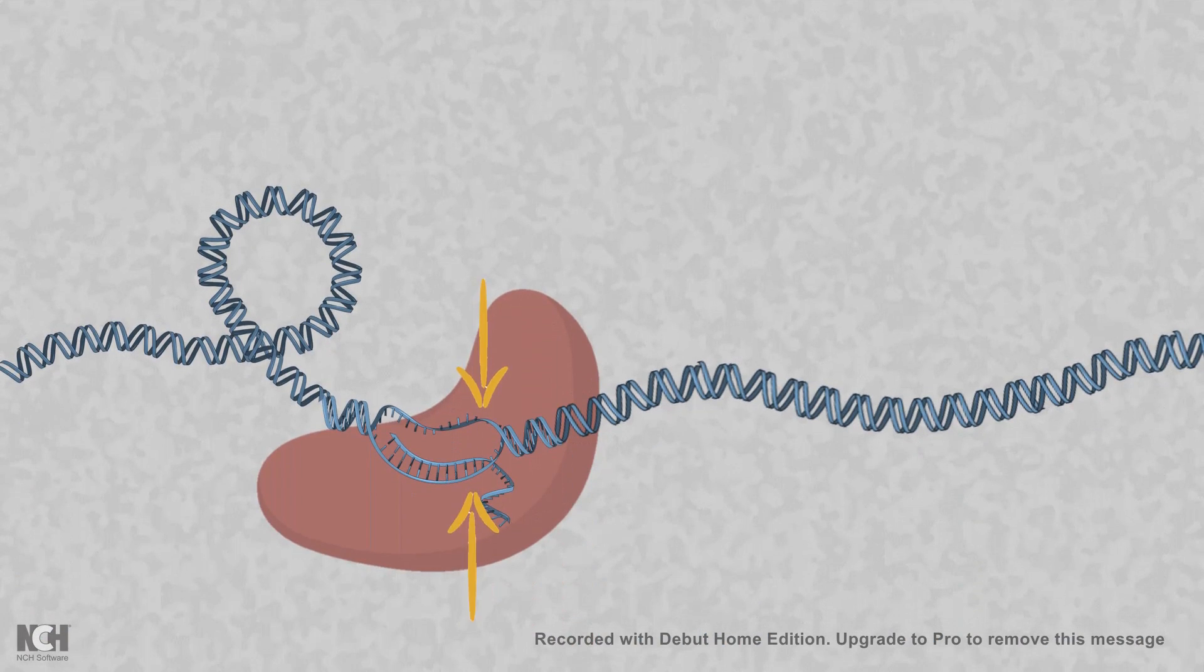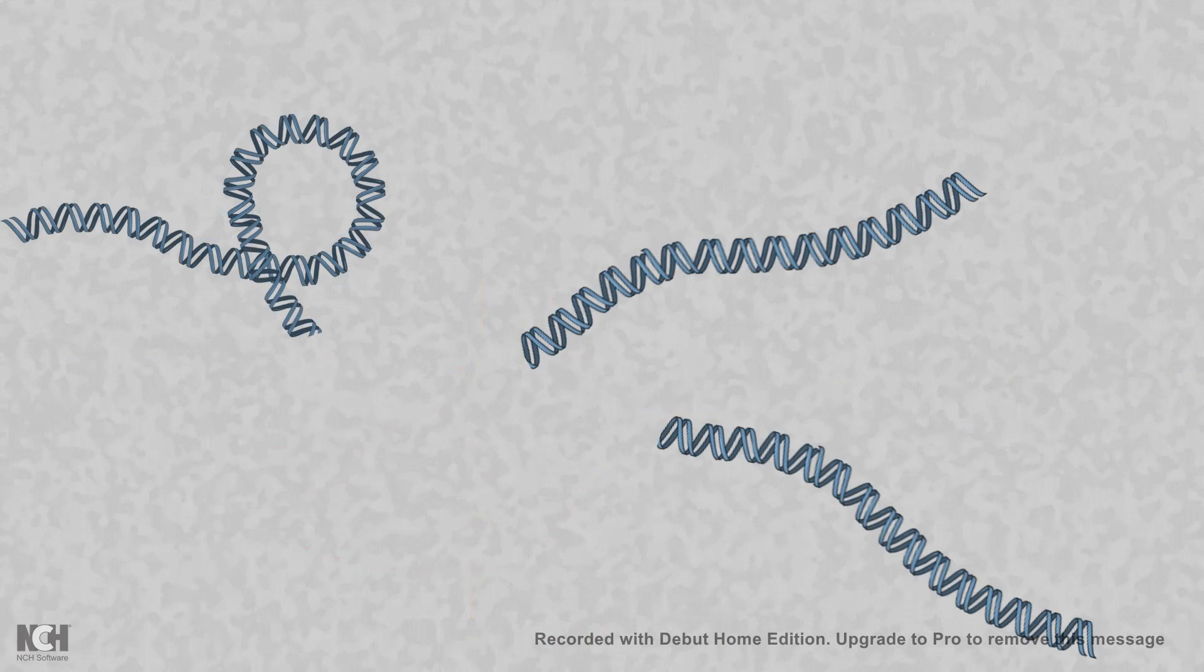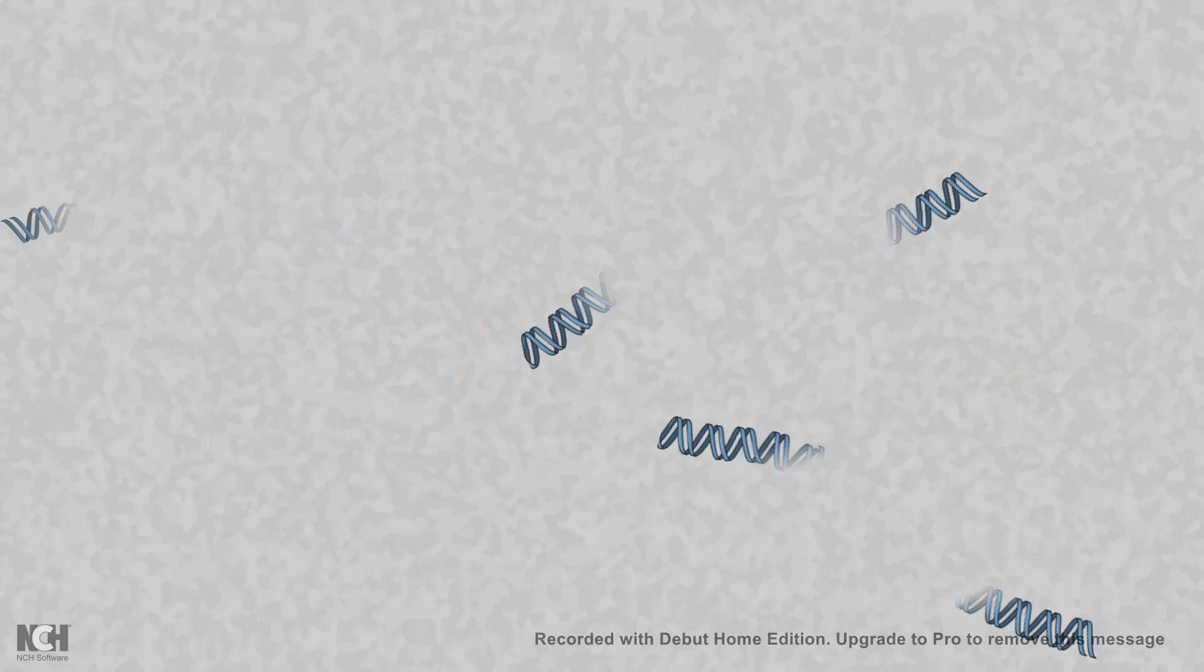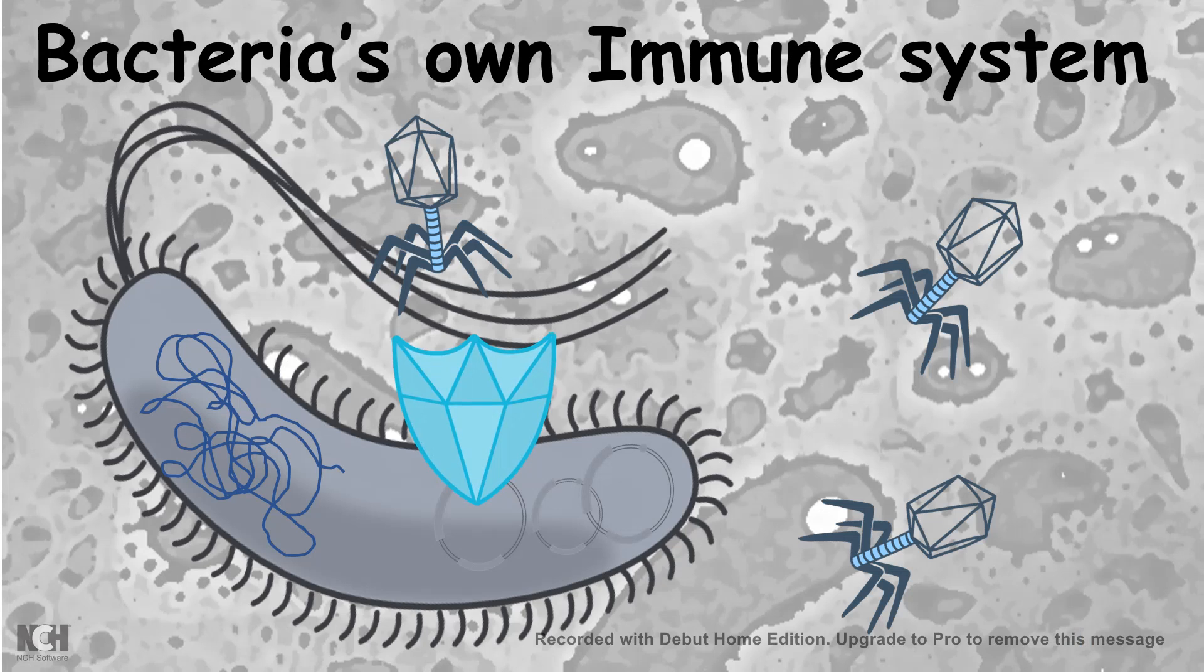Now once the phage genome is cleaved using this CRISPR-Cas9 system, the phage DNA would be degraded and that is how the bacteria protects itself from phage viruses. It's a bacterial adaptive immune system, so precise and beautiful.